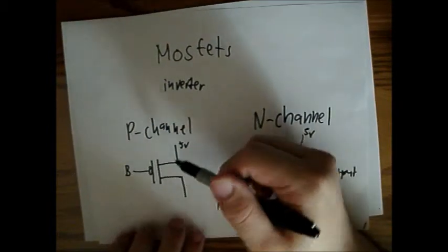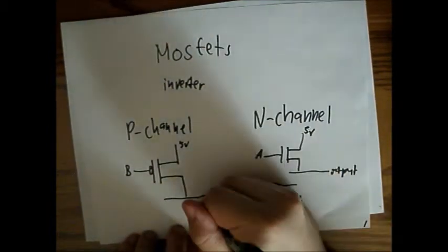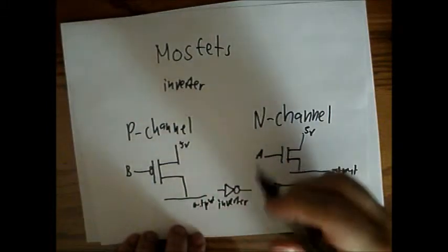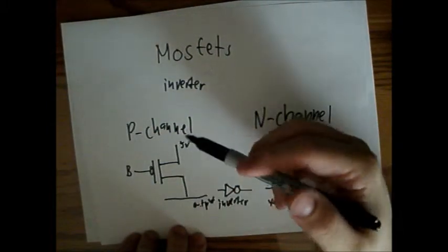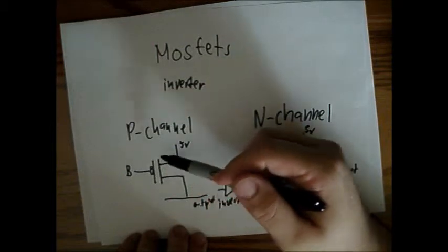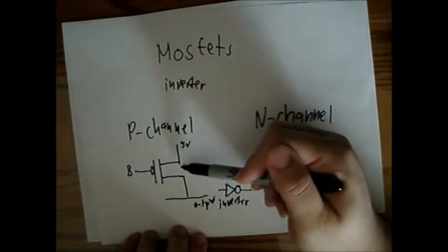So once again, when B is 1, the output line here will be some unknown state. But if B is 0, the connection will be closed, and it will be definitely 5 volts.